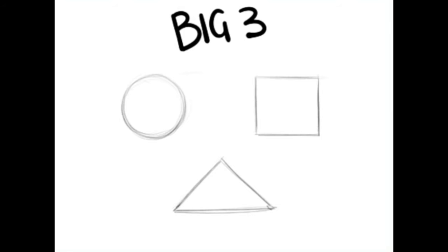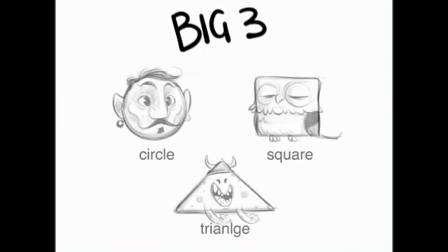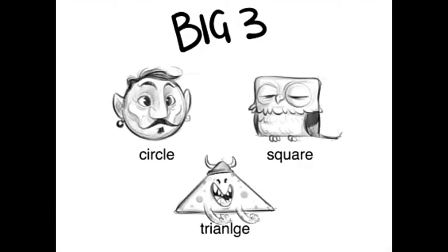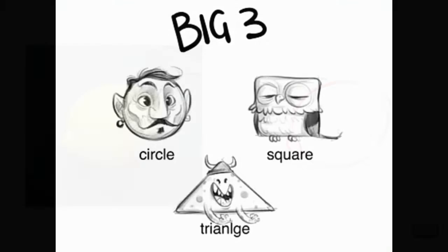What I call the Big Three: the circle, the square, and the triangle. You can draw anything or everything by using these three shapes. You can use them individually or in combination to draw anything you want. Everything you see is made up of a combination of these shapes.